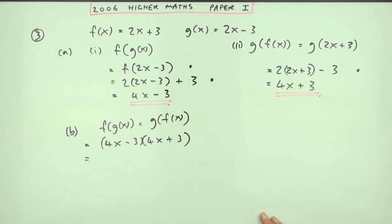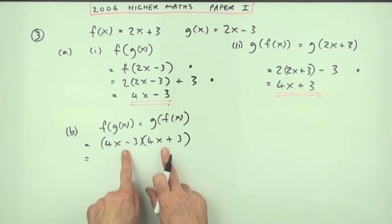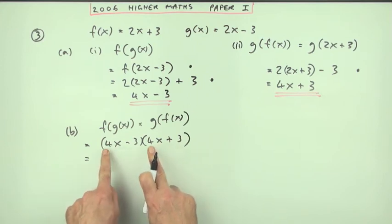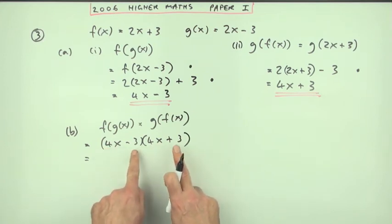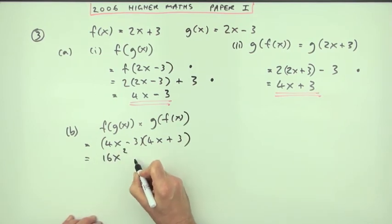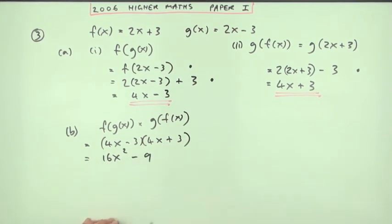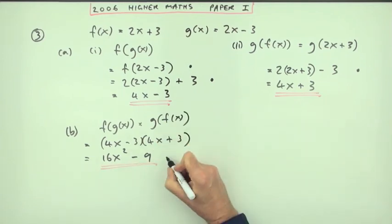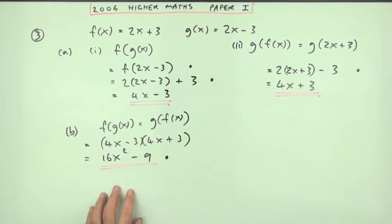But hopefully you'd recognize you've got the difference of two squares, so the result of that must be (4x)² minus (3)². The answer to that must be 16x² minus 9. Now that's just one mark.